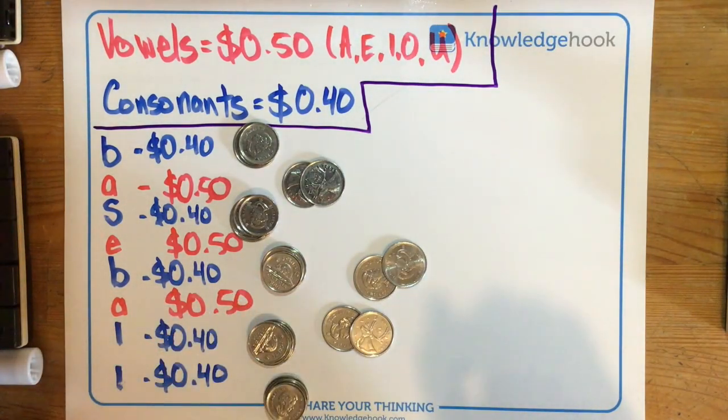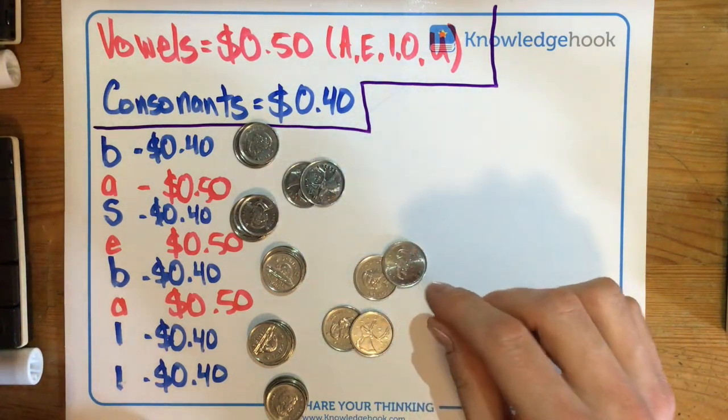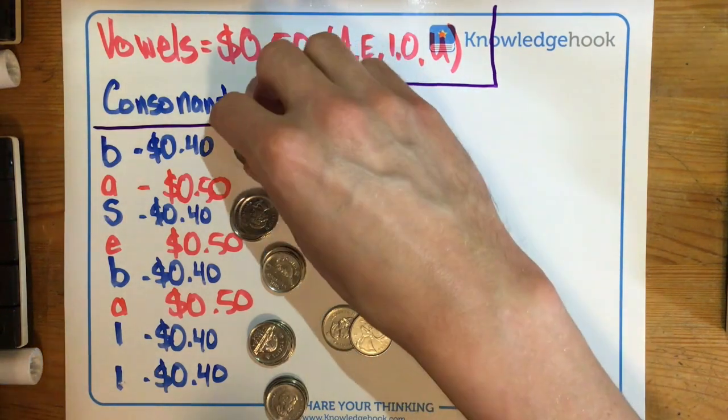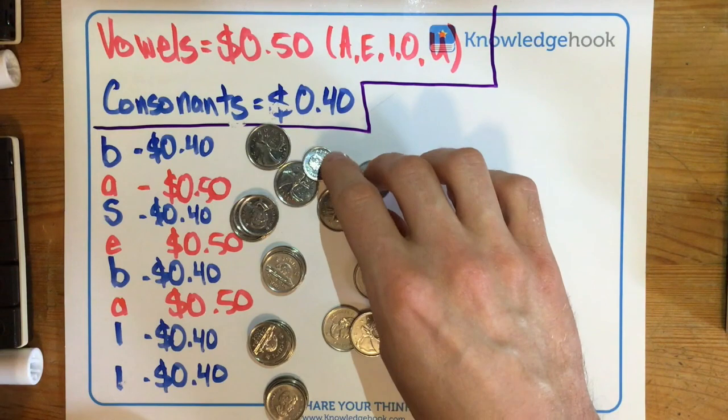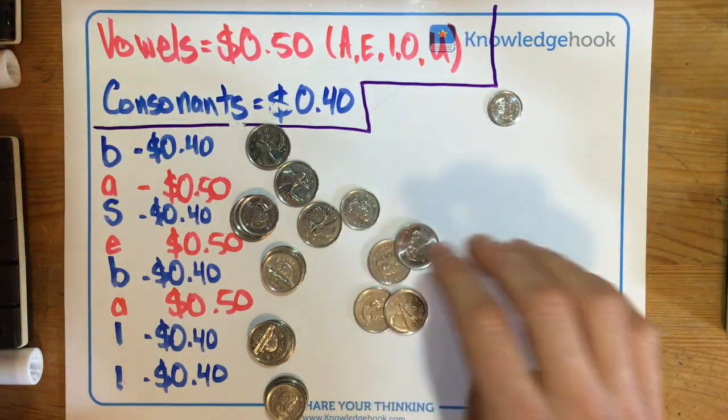Now I'm ready to add these all together, but to make it easier I'm going to divide up my coins by each type of coin. I'm going to put all my quarters into one pile, my only dime into one pile, and all my nickels in a separate pile.